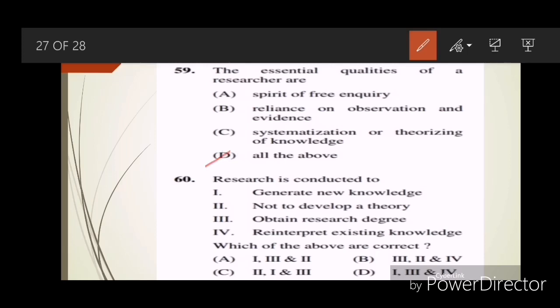Question sixty: Research is conducted to? Answer is D, 1, 3 and 4—that is, generate new knowledge, obtain research degree, and reinterpret existing knowledge. Thank you for watching my channel.